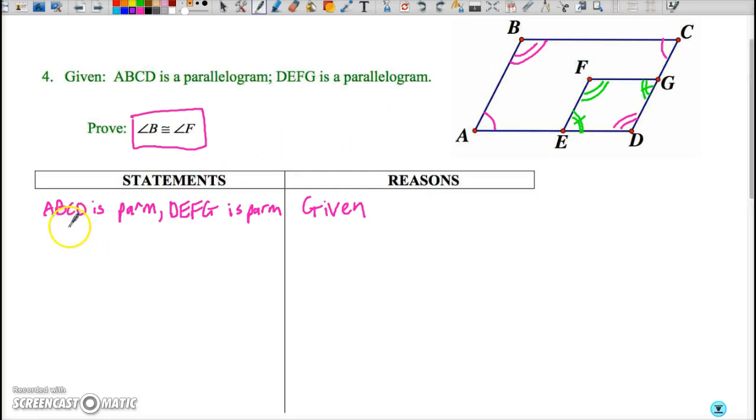So now we're just going to put that into the statement column and so we have angle B is congruent to angle D and we can also make at the same time the statement that angle F is congruent to angle D and we could here put the theorem number.